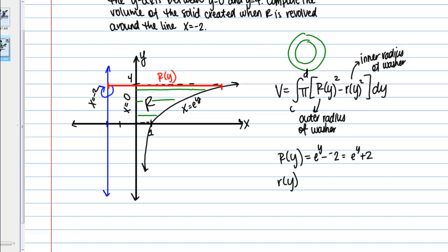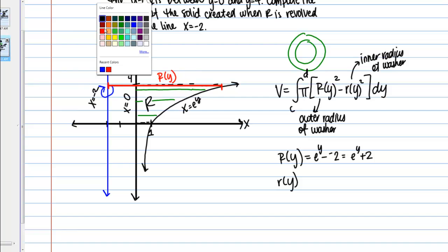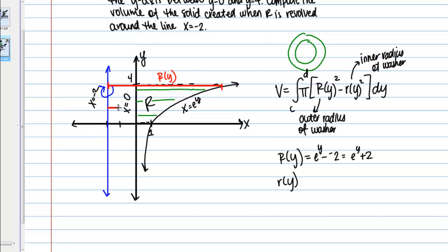The inner radius, little r of y, is the distance between the axis of rotation and the closer boundary. In this case the left-hand boundary of my region is formed by the y-axis. Using right minus left: the right-hand side of the inner radius line is x equals 0, and the left-hand end is x equals negative 2, so little r of y equals 0 minus negative 2, which is just 2. This makes sense — the inner radius is simply the distance between x equals 0 and x equals negative 2.